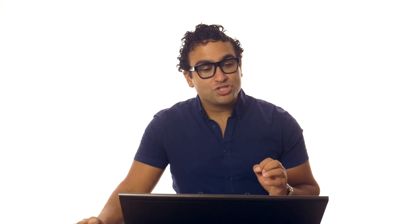The first step is an introduction: what is computer vision? Computer vision is a science used to make computers understand what's happening within an image. For example, in the case of self-driving cars, it can detect a pedestrian, identify a specific lane to stay centered within, or recognize a traffic sign. Computer vision is a science that allows computers to understand images and videos and determine what the computer sees or recognizes.